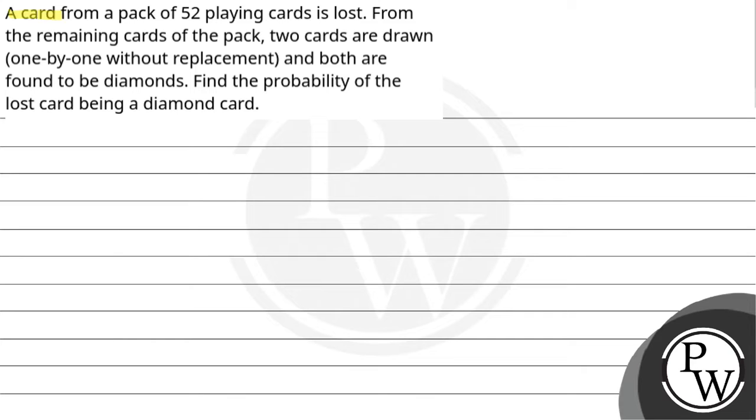Hello, let's read the question. A card from a pack of 52 playing cards is lost. From the remaining cards of the pack, two cards are drawn one by one without replacement and both are found to be diamonds. Find the probability of the lost card being a diamond card.